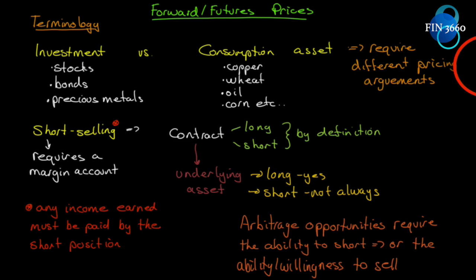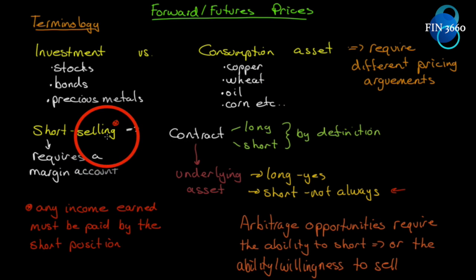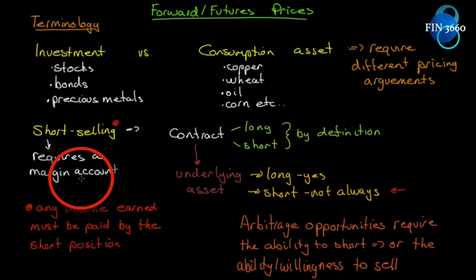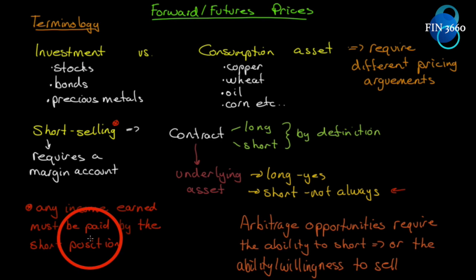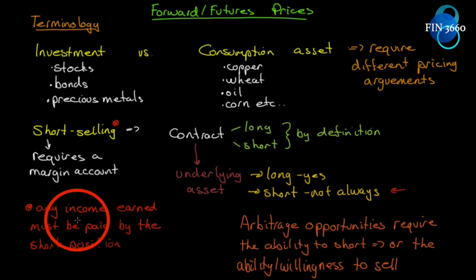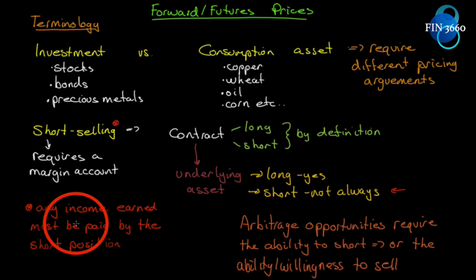The shorting point is where the argument breaks down under consumption assets. If someone owns an asset and will sell it to take advantage of an arbitrage opportunity, we accept that sellers are equivalent to those shorting — and that holds up well with investment assets. One thing to be aware of with investment assets like stocks and bonds: when you short something, any income earned must be paid by the short position. So if you short a stock that pays a dividend, it increases your cost of shorting, and that must be incorporated into the proper forward or futures price.